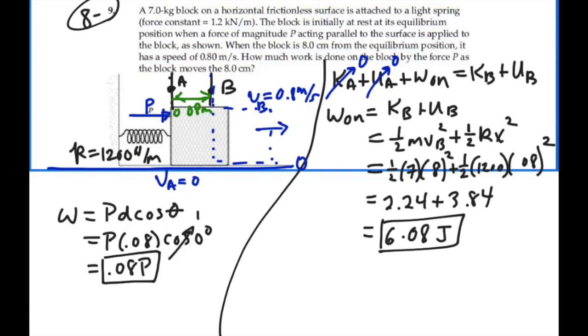If we really wanted to find out what P was, we could reverse engineer from this formula over here, and we would find that P should equal the work done divided by 0.08. I'm just curious. What is that? 76 newtons. Nice to know. It's extraneous information on this problem, but nice to know. So the work done by force P is 6.08 joules.